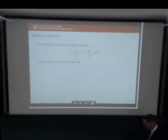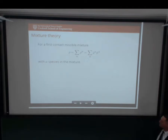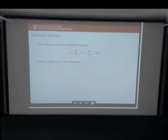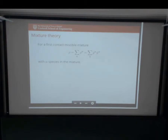Now we're changing directions a bit, but I needed all that - the notion of push forward and pull back, and that constitutive theory - in order to do this next part. If we have a first contact miscible mixture of alpha species, then the total density is the sum of the densities. These are the sort of local densities - the mass of the alpha species divided by the volume. Or you can define these densities row-bar as the volume of the alpha species divided by the volume of the mixture, multiplied by phi, which is a volume fraction. You also have the volume fraction constraint: all the phi's must add up to one.